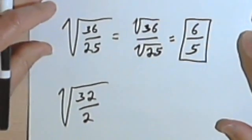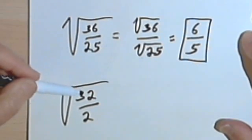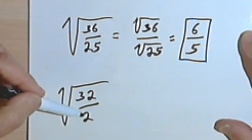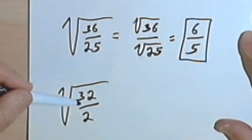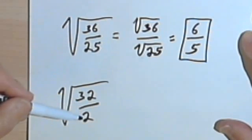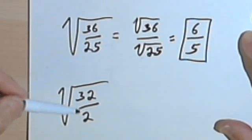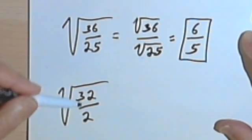Here's another example. Okay, I've got the square root of 32 over 2. Now, the reason I put this in is this. Just because you could break this down into two square roots, it doesn't mean you want to. Before you do anything,